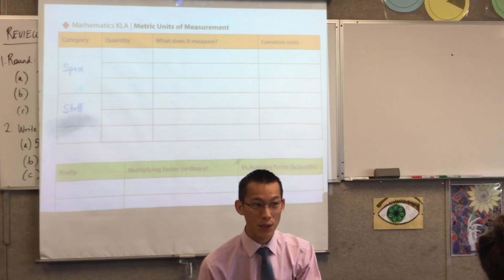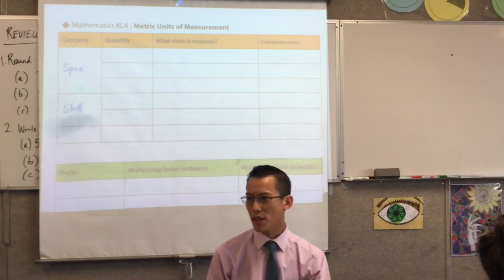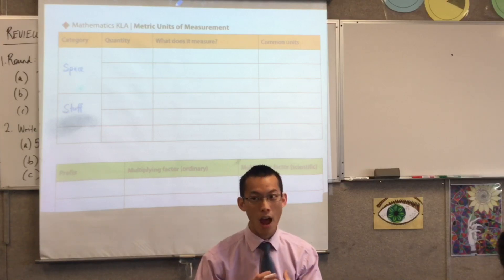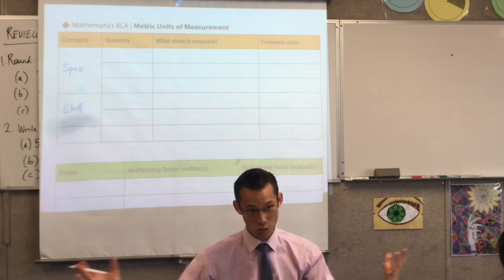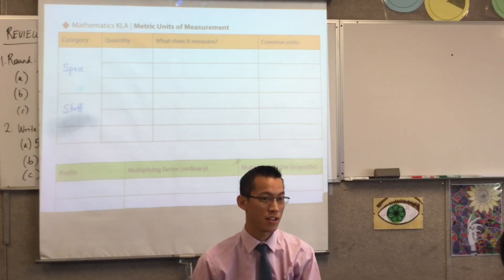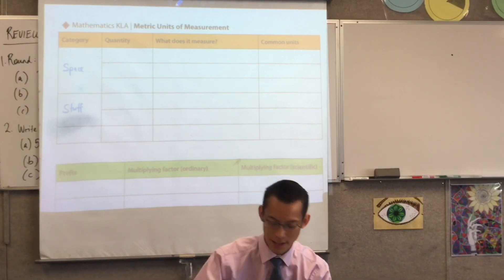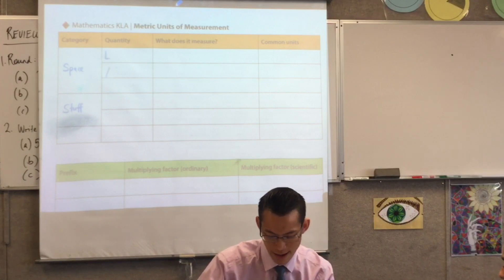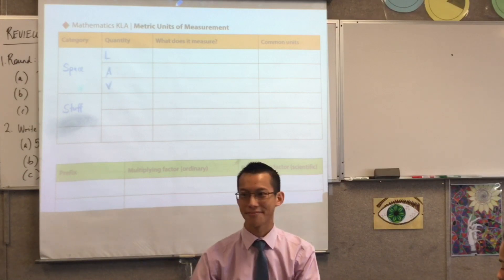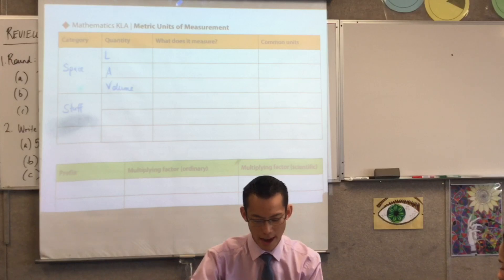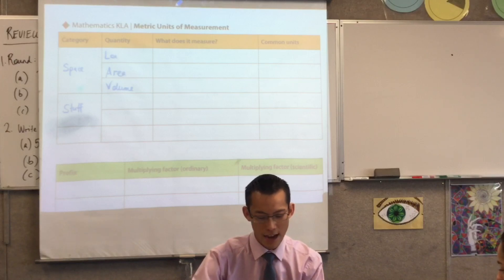So, three measures of space. There are three because we live in, we inhabit a three-dimensional world, so we like to measure things in three dimensions. The three measurements — does anyone know? They start with an L, an A, and a V. We've got volume — area and length.